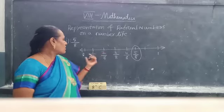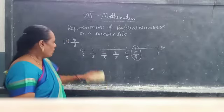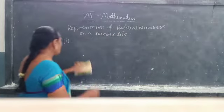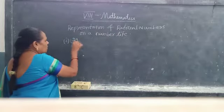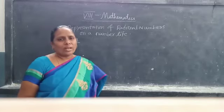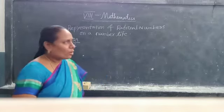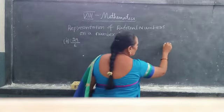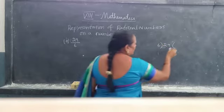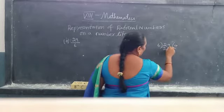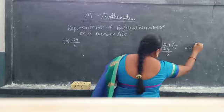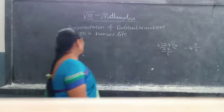Now we represent one more fraction — the rational number 29 by 6. What type of fraction is it? It is not a proper fraction; it is an improper fraction. So change this fraction into a mixed fraction. By division: 6 goes into 29 four times giving 24, and 29 minus 24 is 5. So this can be written as 4 and 5 by 6.